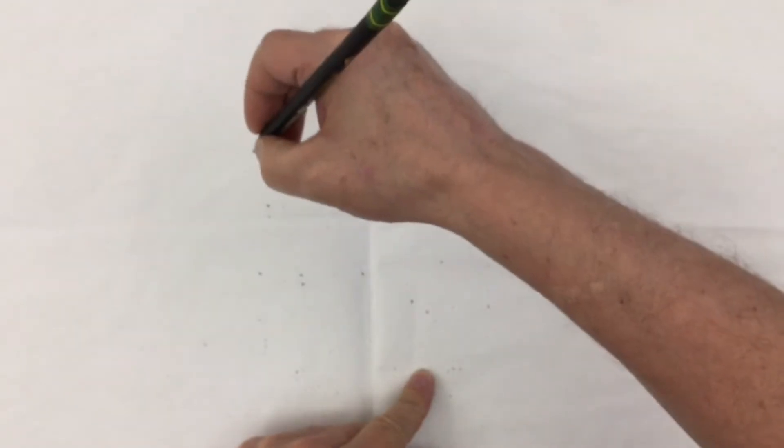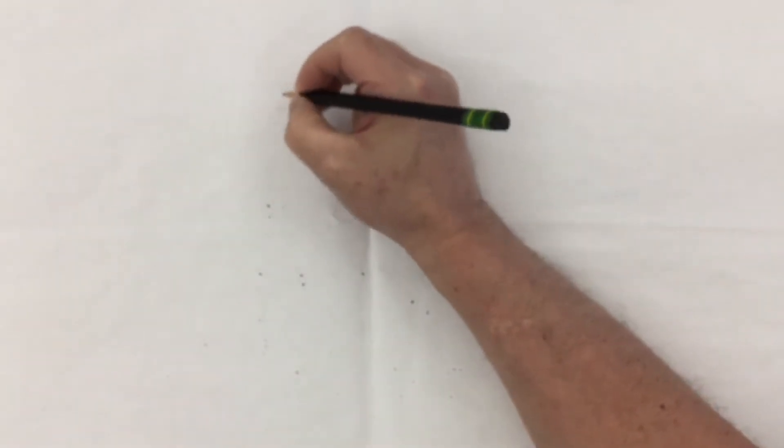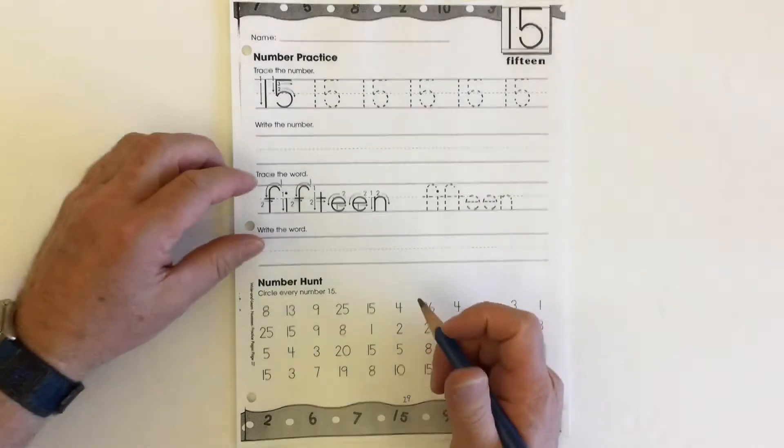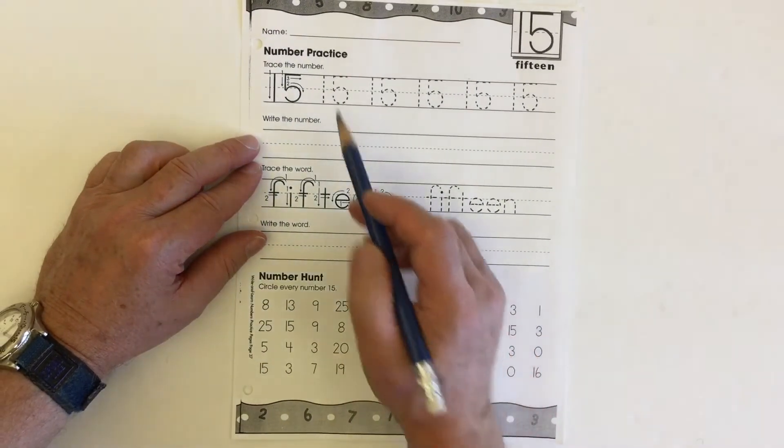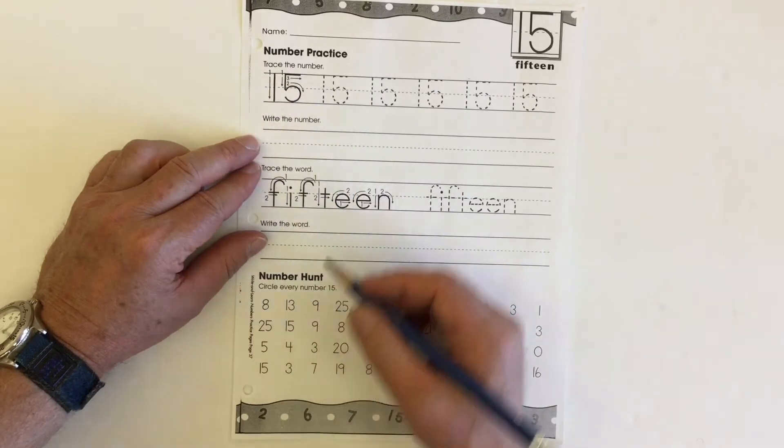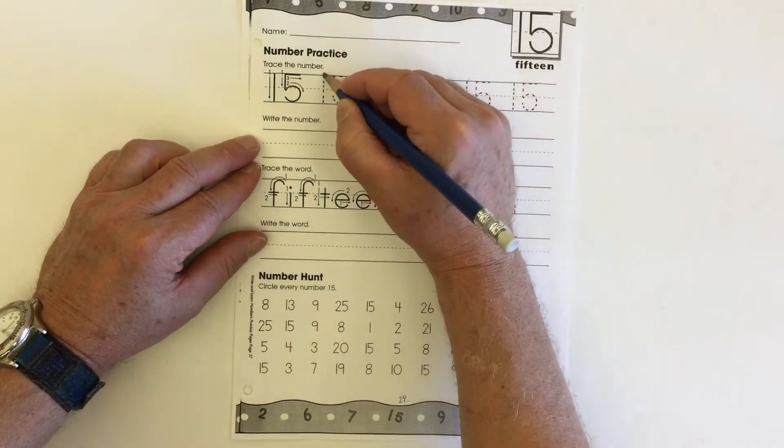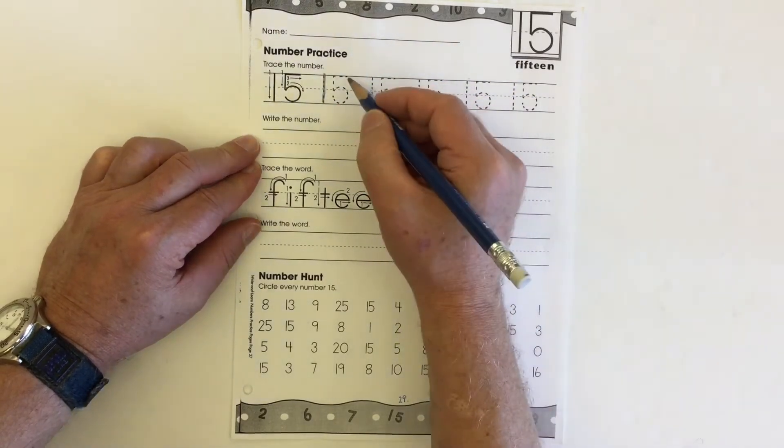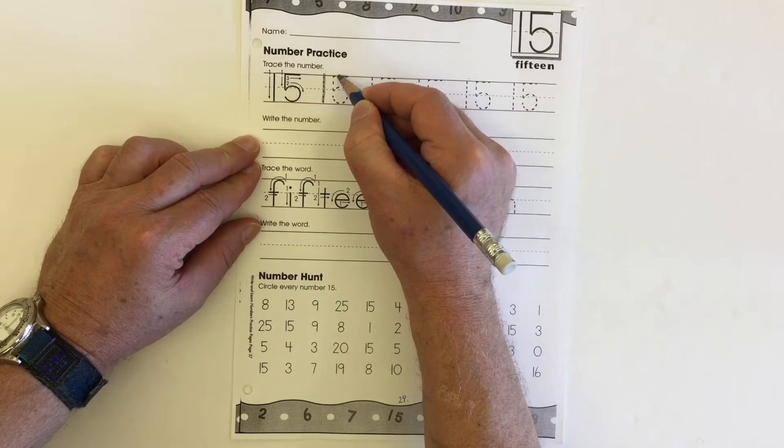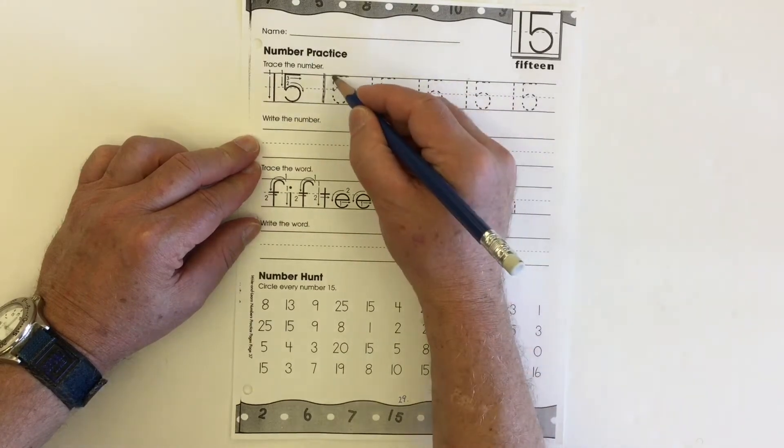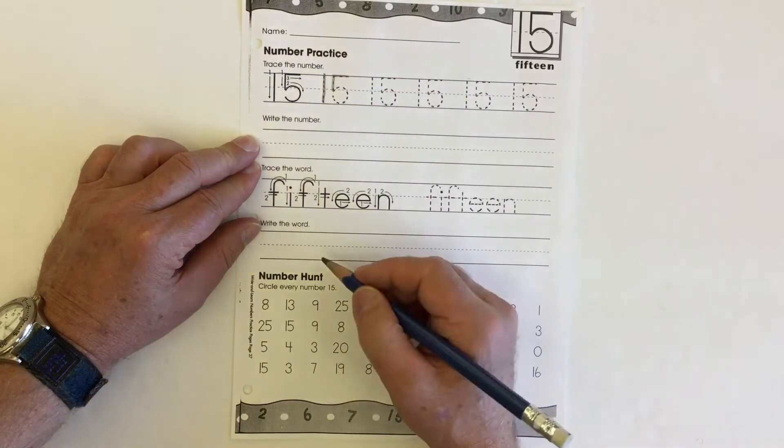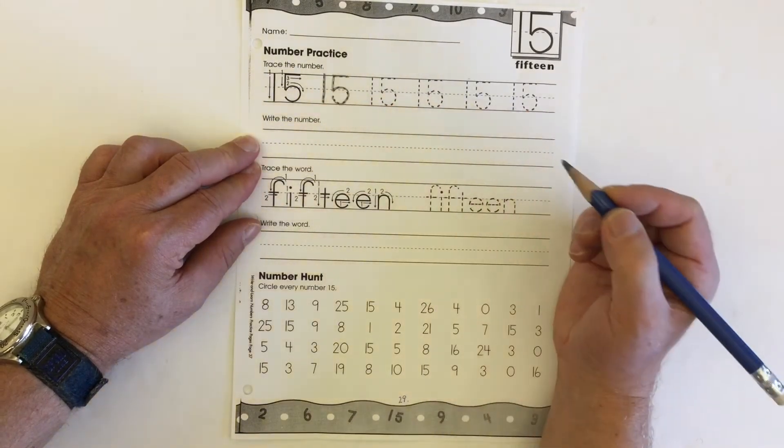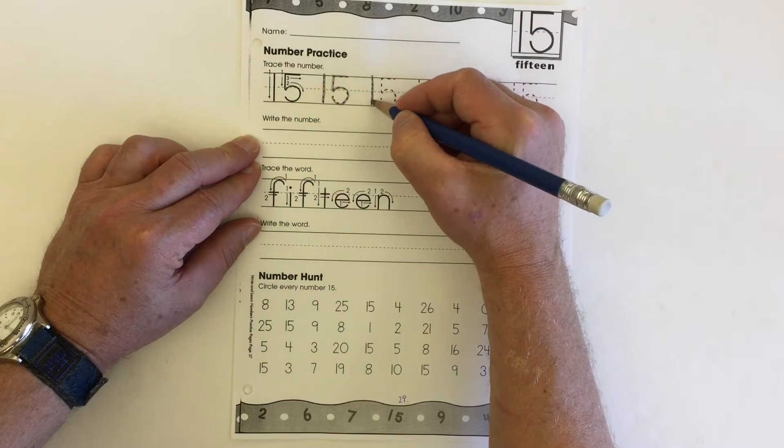Okay, here we have a worksheet for number formation, number practice for the number 15. That's a two-digit number with a one and a five. We start off on the top line and do our one by going straight down to the bottom line. Five, we start over here to the right and go across the top to the left, then go down to the middle, and then do almost a whole circle that comes down and touches the bottom. So the one, and then the five has three parts.